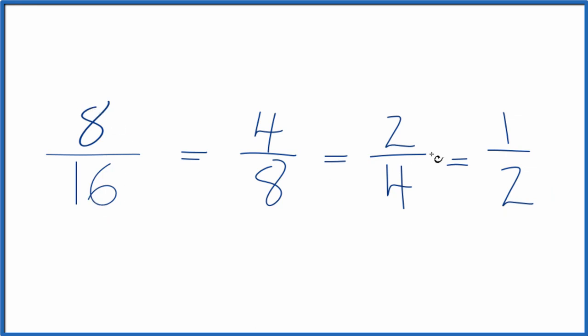So we've simplified 8 16ths down to 1 half. And all of these here, they're equivalent fractions. They're all equal to the decimal 0.5.